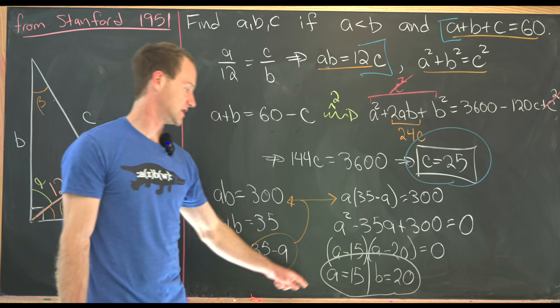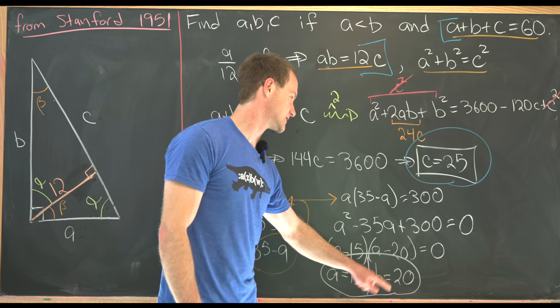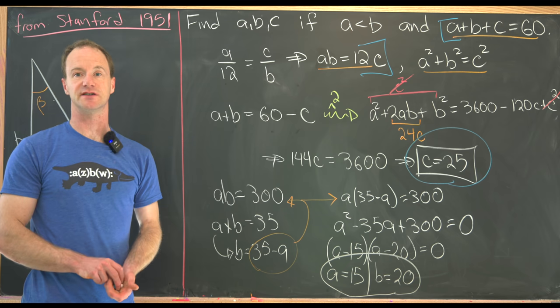So in the end, we have one solution. A is 15, B is 20, and C is 25. And that's a good place to stop.